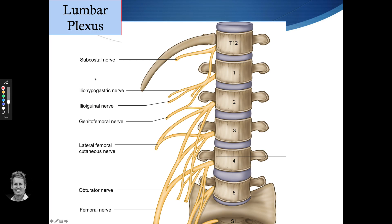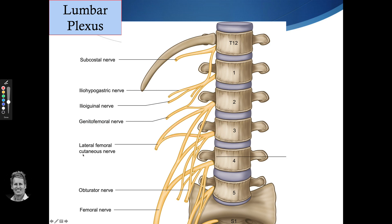The three nerves on the left-hand side here: the iliohypogastric nerve and the ilioinguinal — they basically come from one single nerve root, L1. The genitofemoral nerve will come from L1 and also L2. The lateral femoral cutaneous will come from L2 and also L3, and that's mainly a sensory nerve, hence the word cutaneous — on the outside part of the thigh.